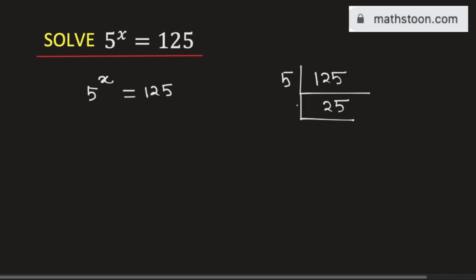Again, we can divide it by 5 and we get 5 here. And 5 is divisible only by 5 and then we get 1.